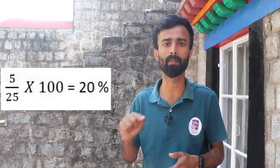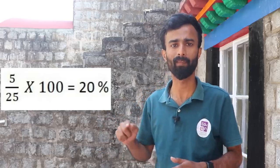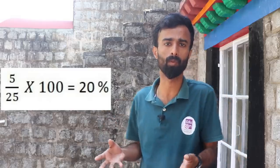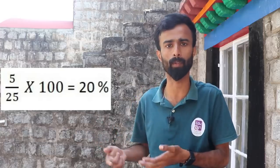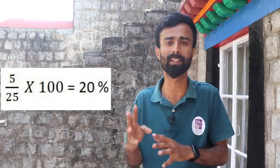For 30% free: 5 by 25, 100 by 25, 100 by 25 — the answer is 20 percentage.